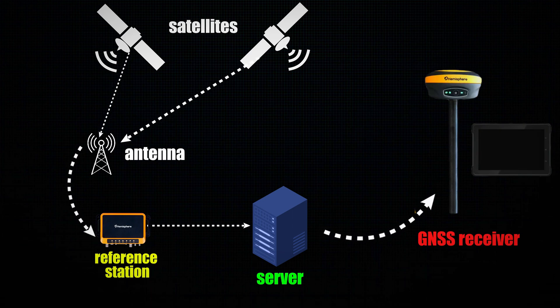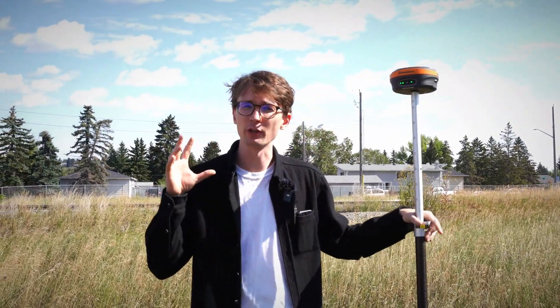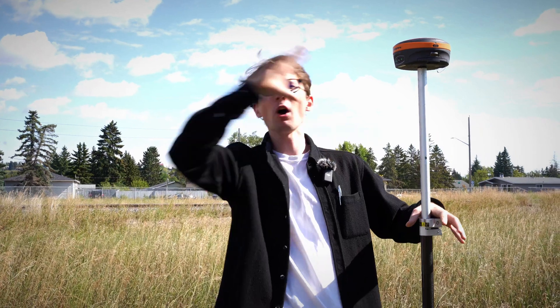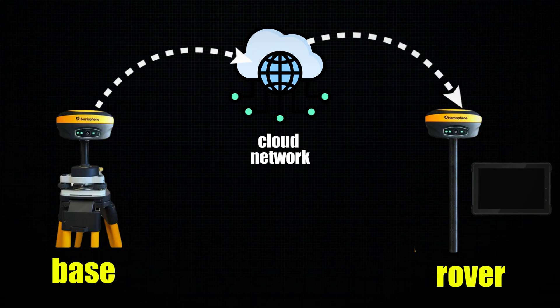What this is doing is it's piping the information from the antenna to a server. That server then distributes that information to your antenna in the field, where you then get a fixed solution. So what is that server actually doing? When we talk about a server with RTK, there are a number of different things it can be doing. For today's video, I'm really going to focus on two, because those are the two most commonly used in North America — and those are point-to-point and VRS-type servers.